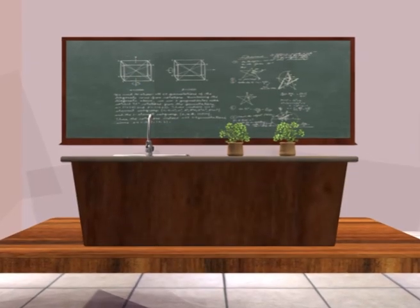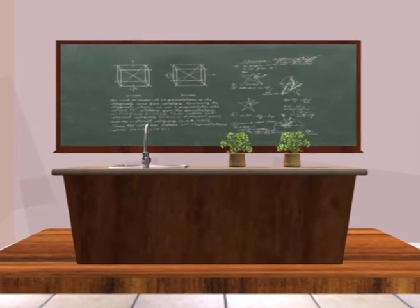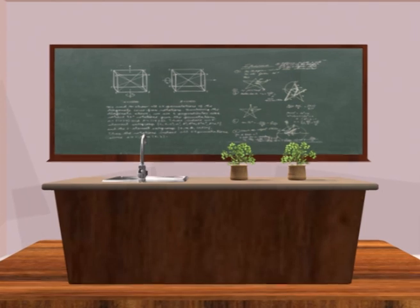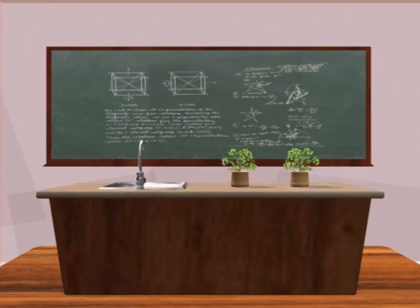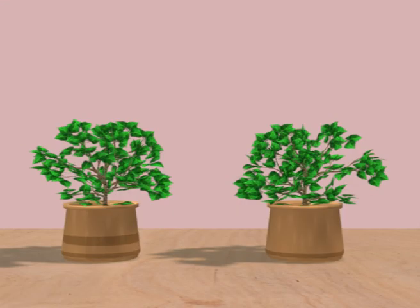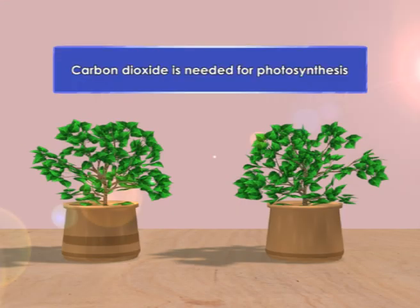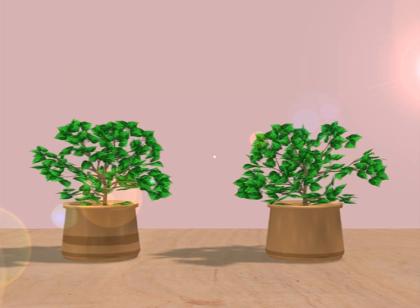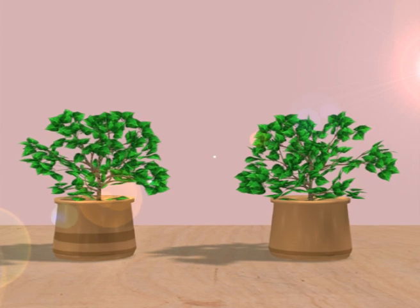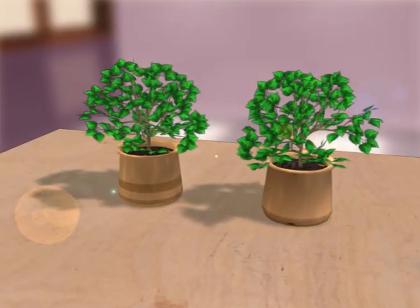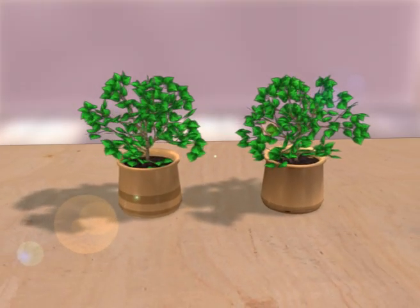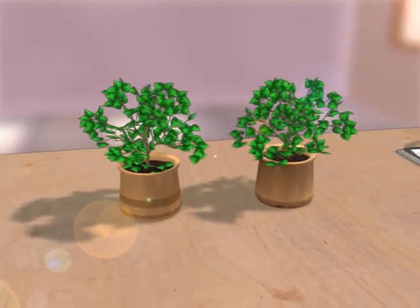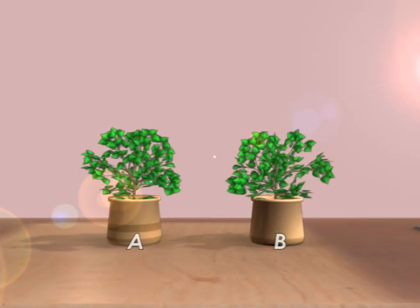The following experiments can show the factors needed for photosynthesis. Carbon dioxide is needed for photosynthesis. This experiment shows that carbon dioxide is needed for photosynthesis. Prepare the apparatus as shown here.